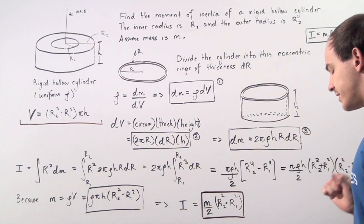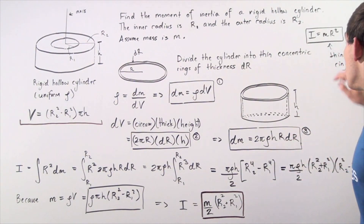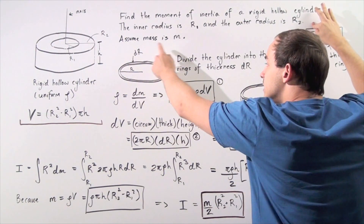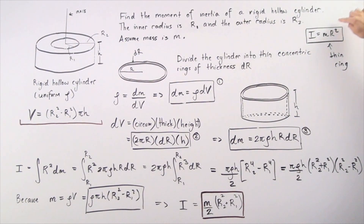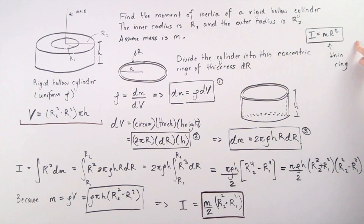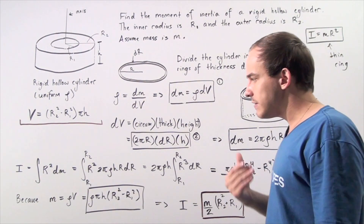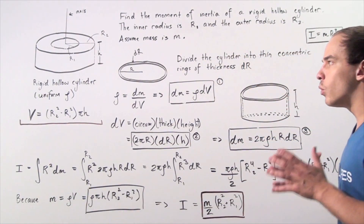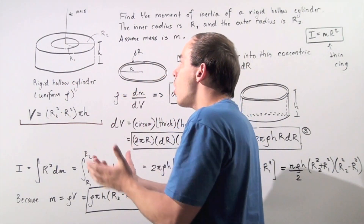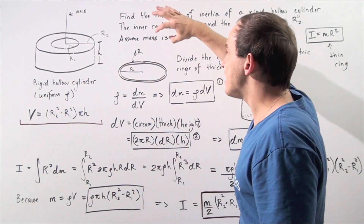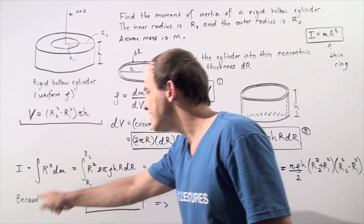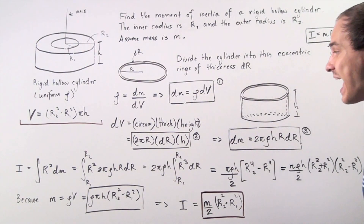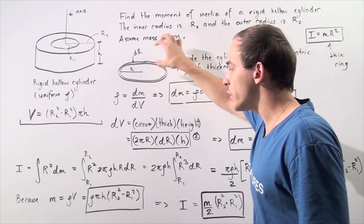We'll need equation 3 in a moment. First, recall that the moment of inertia of a thin concentric ring is I = m·r², where m is the mass and r is the radius — as discussed in a previous lecture. Now we want to find the total moment of inertia of all rings composing the hollow cylinder by summing them up via an integral: I = ∫r²·dm.